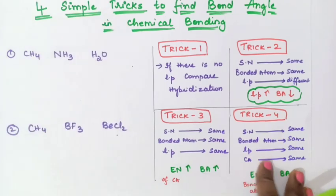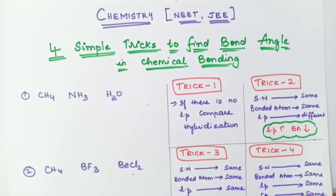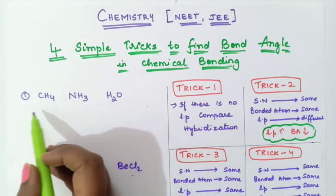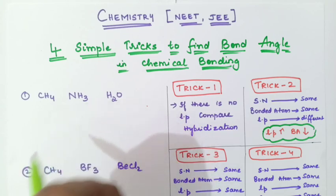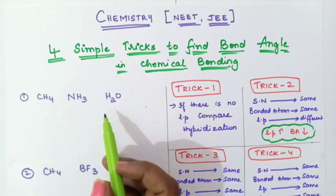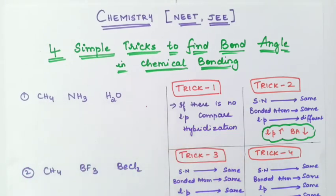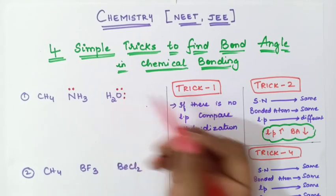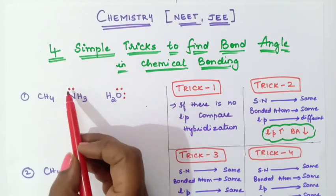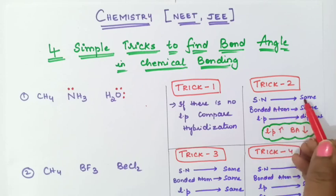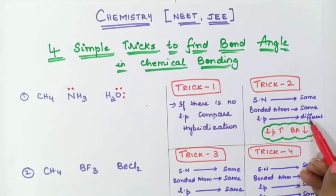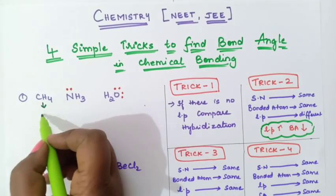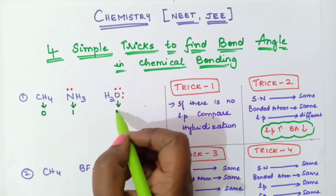First example: CH₄ (methane), NH₃ (ammonia), and H₂O (water). We are going to compare which has more bond angle and which has less. Methane has no lone pair, ammonia has one lone pair, and water has two lone pairs. Since lone pairs are present, we cannot use Trick 1. Here the number of lone pairs are zero, one, and two respectively.